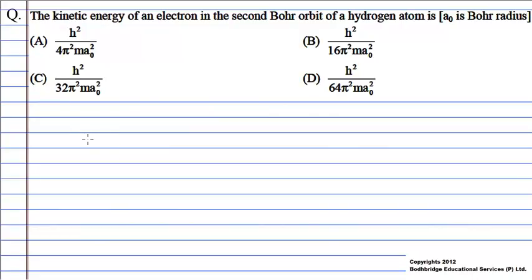The kinetic energy of an electron in the second Bohr orbit of a hydrogen atom is where a₀ is Bohr's radius. In this question we have to find out the kinetic energy of an electron in the second Bohr orbit of a hydrogen atom.